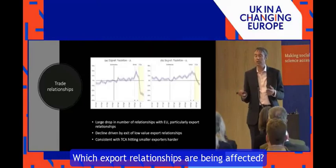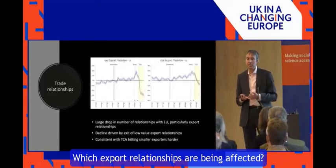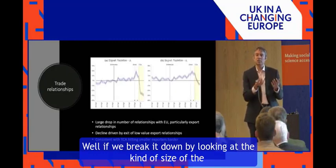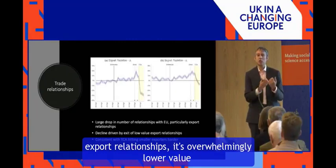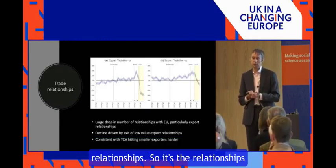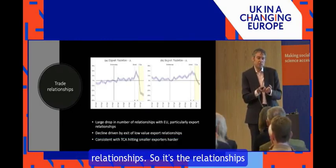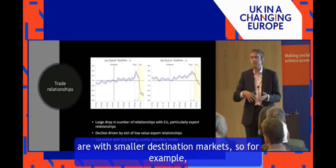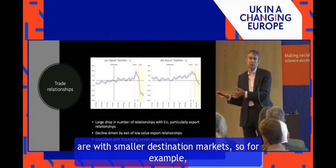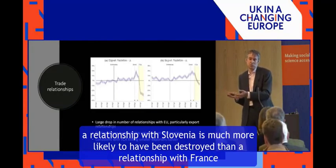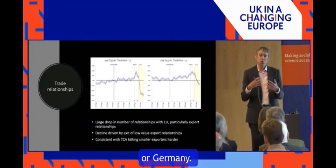Which export relationships are being affected? If we break it down by looking at the size of the export relationships, it's overwhelmingly lower-value relationships — the relationships that account for smaller amounts of trade and that are with smaller destination markets. For example, a relationship with Slovenia is much more likely to have been destroyed than a relationship with France or Germany.